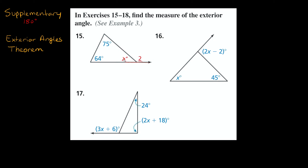If I added up X and this exterior angle out here, you can see they're along a straight line, so they form a 180-degree angle together. To figure out X, all you need to know is that all the angles inside a triangle always add up to 180 degrees. So 75 plus 64 plus X equals 180. Subtracting 75 and 64, we get X equals 180 minus 75 minus 64, so X equals 41 degrees.